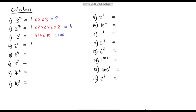Question 5: 0 to the power of 4. We start with 1 and multiply by 0 four times: 0 times 0 times 0 times 0. It doesn't matter how many times we multiply by 0 — anything times 0 is always 0.